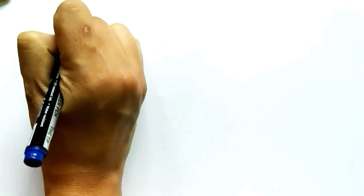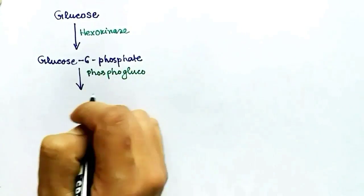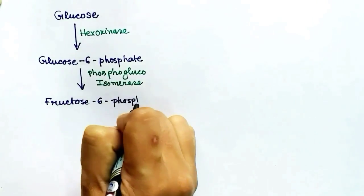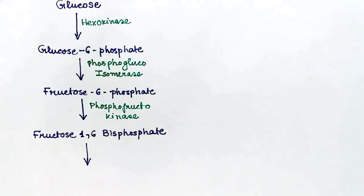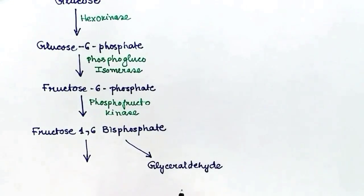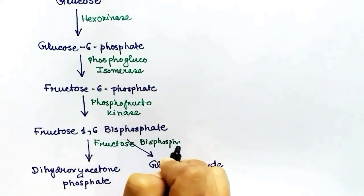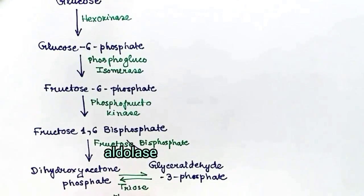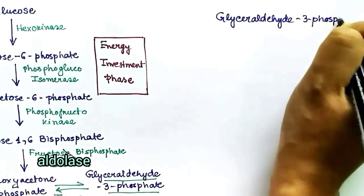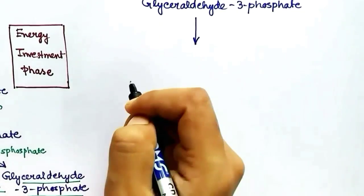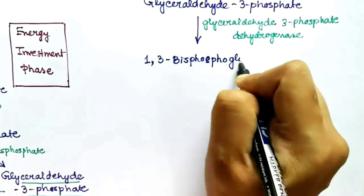In a quick recap: glucose goes through hexokinase and one phosphate is added at the sixth position to form glucose-6-phosphate, which isomerizes to fructose-6-phosphate. Phosphofructokinase adds another phosphate to form fructose-1,6-bisphosphate. This is then broken down into two three-carbon molecules: dihydroxyacetone phosphate and glyceraldehyde-3-phosphate, which are interconvertible by isomerase.